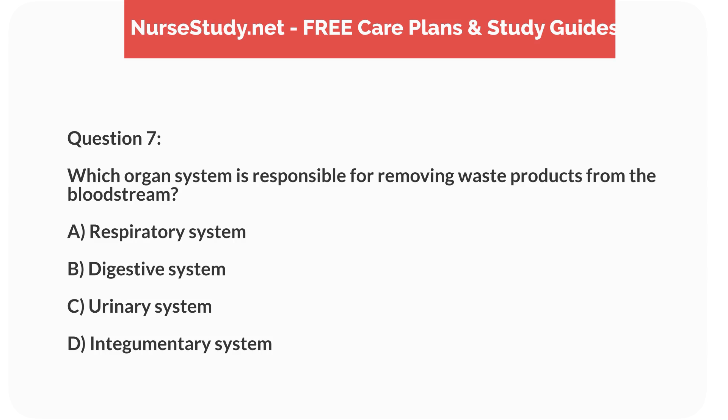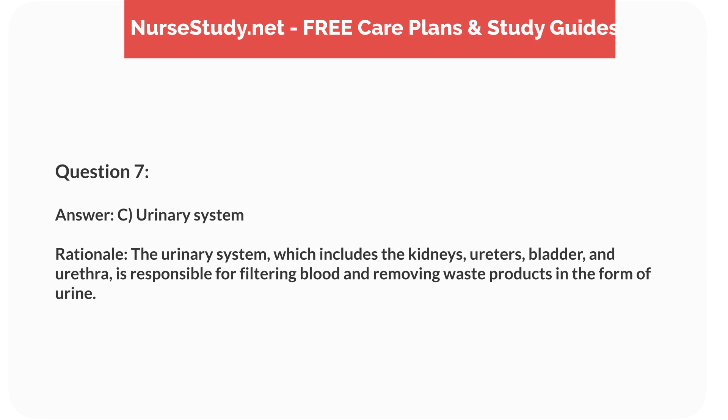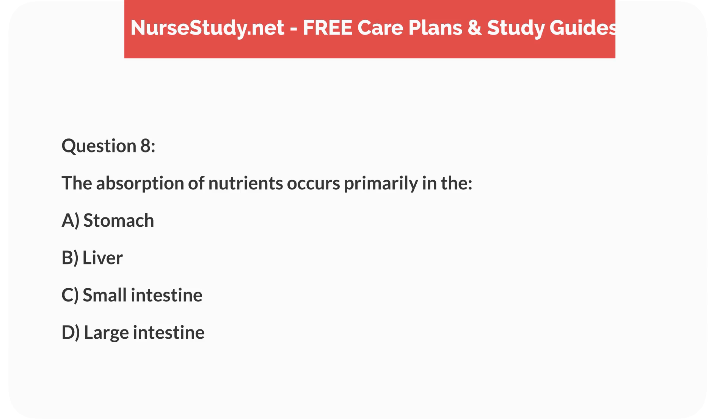Question 7: Which organ system is responsible for removing waste products from the bloodstream? A) respiratory system, B) digestive system, C) urinary system, D) integumentary system. Answer: C, urinary system. Rationale: The urinary system, which includes the kidneys, ureters, bladder, and urethra, is responsible for filtering blood and removing waste products in the form of urine.